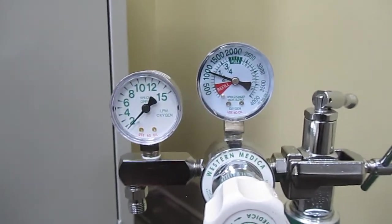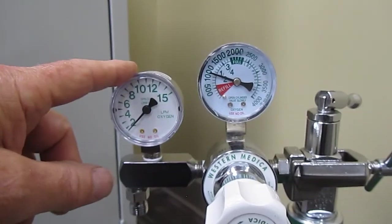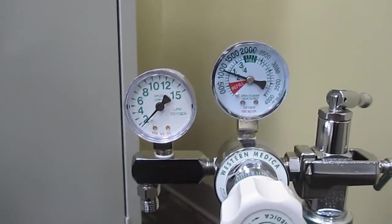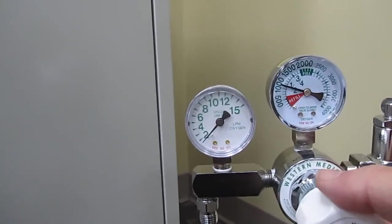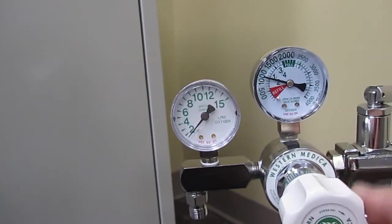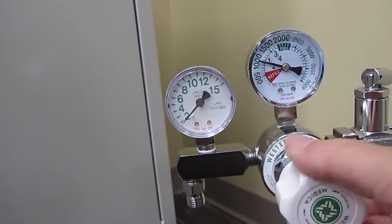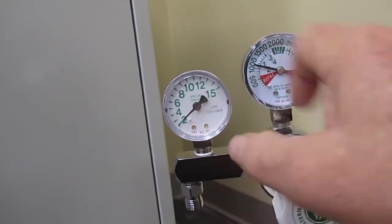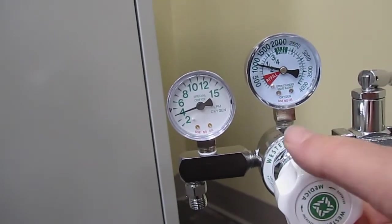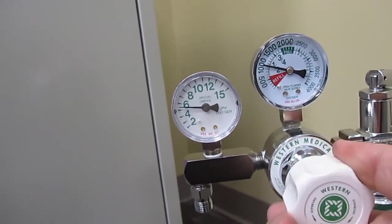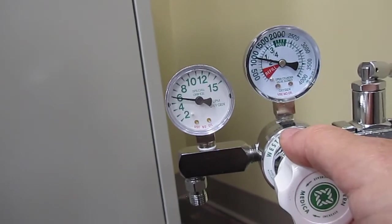The G stands for gauge, and here we have a flow which is our liter flow. Liters per minute. I'm going to turn this on again, and our flow gauge comes up. Four liters per minute, six liters per minute.